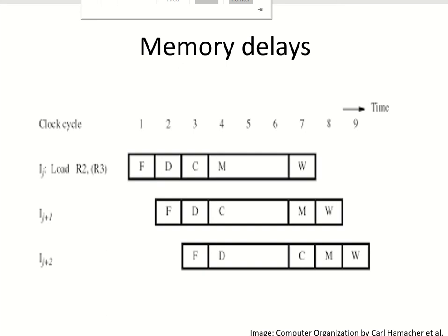Delays which arise from accessing memory are another cause of stalls in the pipeline. If there is any instruction which requires memory access and the required data is not available in the cache, the system has to access main memory to get it from there. This will delay the subsequent instructions.